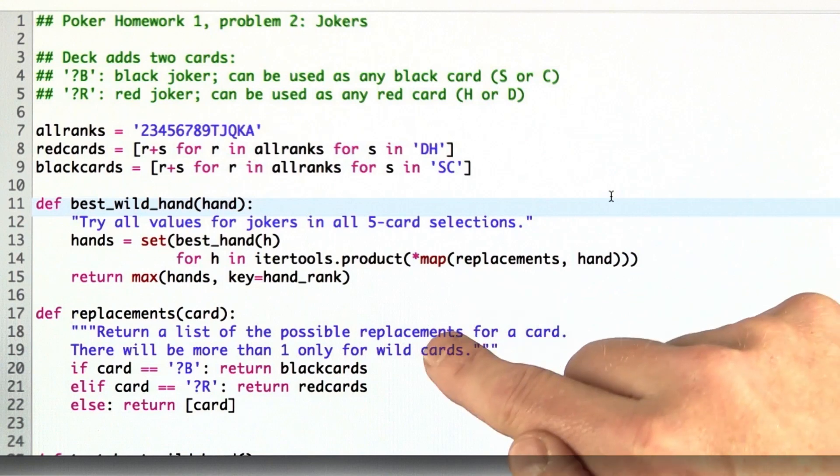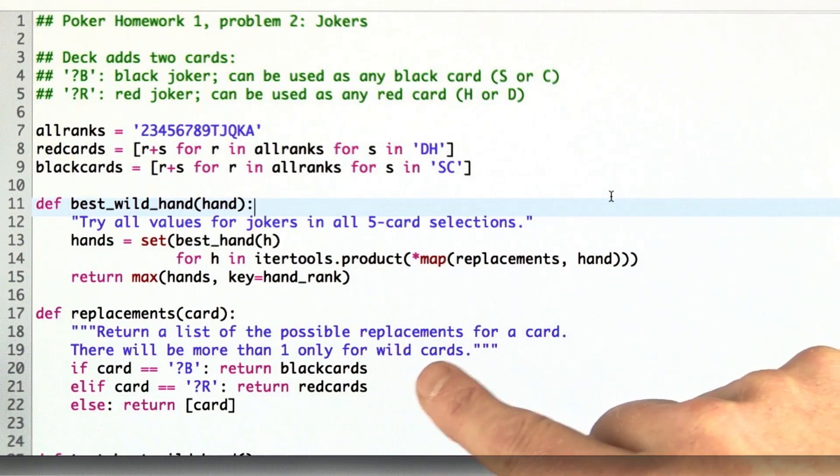Replacement takes a card and replaces or comes up with a list of possibilities for that card. If the card is a black joker, then it can be replaced with all the black cards. If the card is a red joker, it can be replaced with all the red cards. Otherwise, it can replace only with itself. We'll make that a list because the interface here is that you give me one card, and I give you a list of all the cards it can be replaced with.